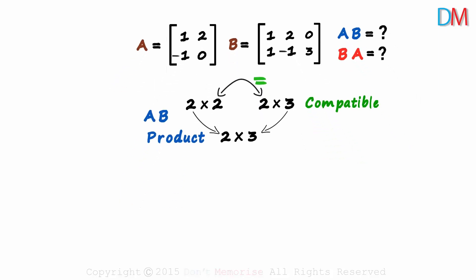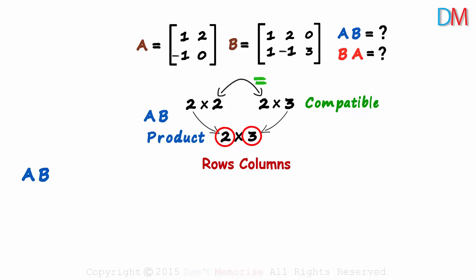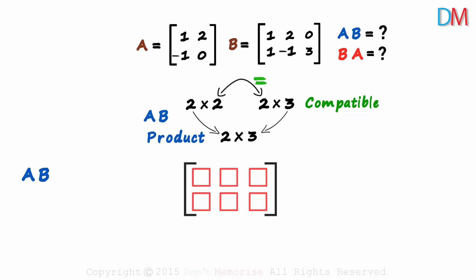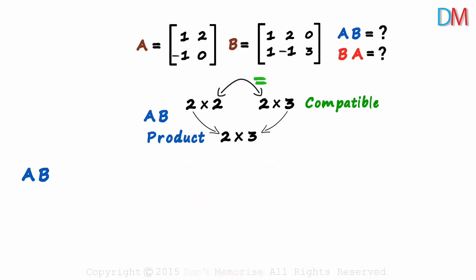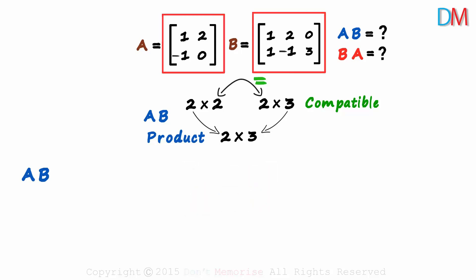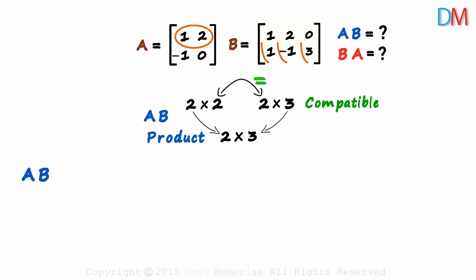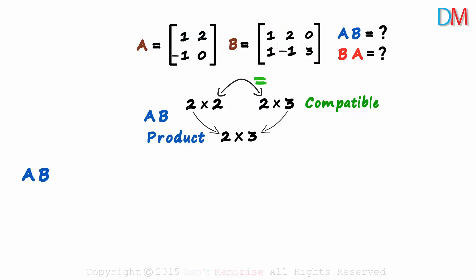We zoom out and find the product AB. We know that its order is two by three — two rows and three columns. We need to find the elements in these six positions. The best way to multiply these two matrices is to take the first row of the first matrix and multiply it with each of the columns of the second matrix one by one, and then do the same with the second row and so on.